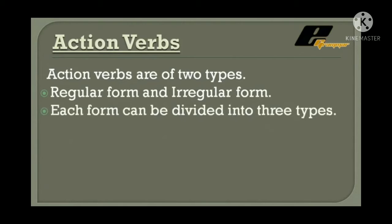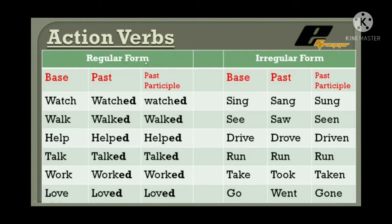Action verbs are of two types: regular form and irregular form. Each form — regular and irregular — can be divided into three more types.